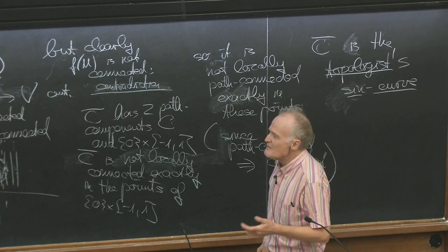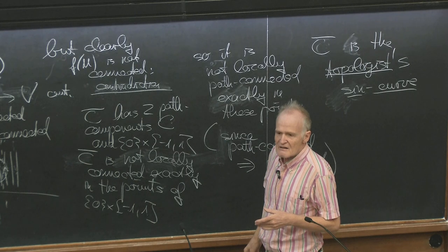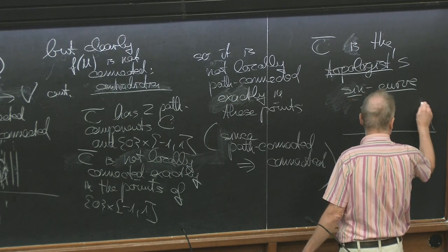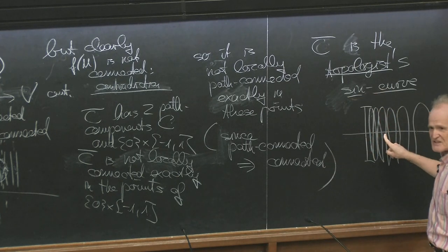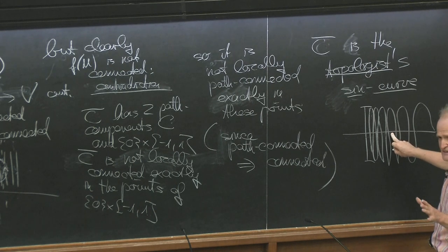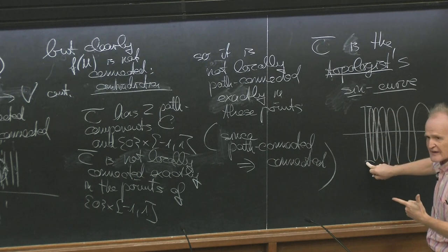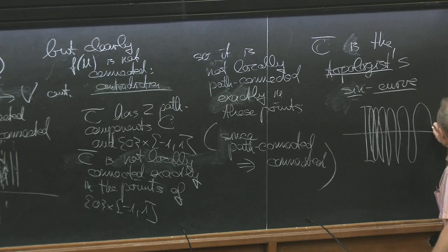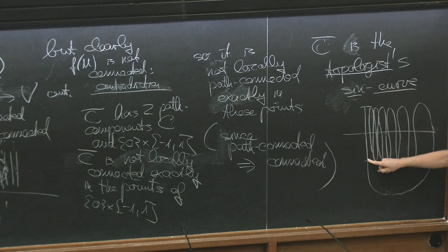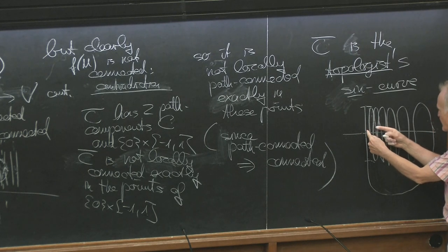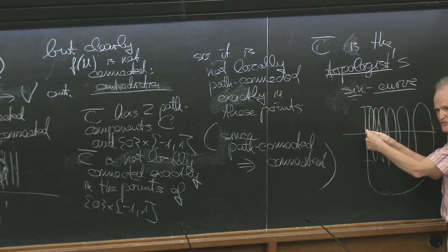There's another strange example. You can make it path connected — how? You don't finish here, but go back to this point. Now it's path connected. You cannot go from the interval to C directly, but you can go all the way around, so this is now path connected.